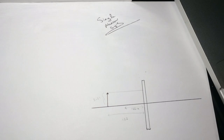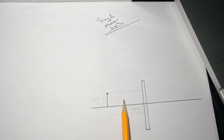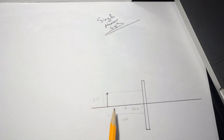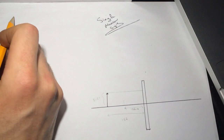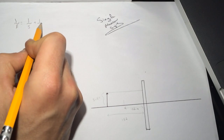Hi guys, this is the single mirror system smart physics problem. You can read the full question in the description below. We have an object and they told us the image was 1.26 here. They want to see if this is a convex or concave mirror. Let's do it by math first: 1 over f equals 1 over s plus 1 over s prime.